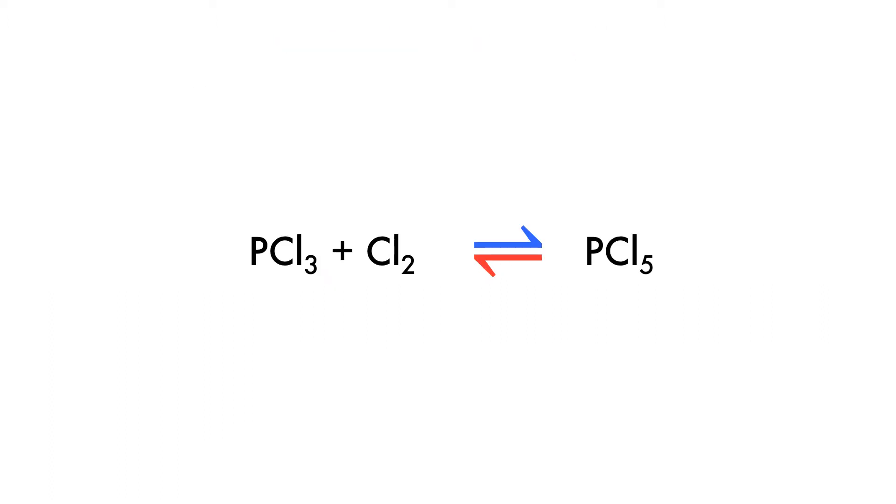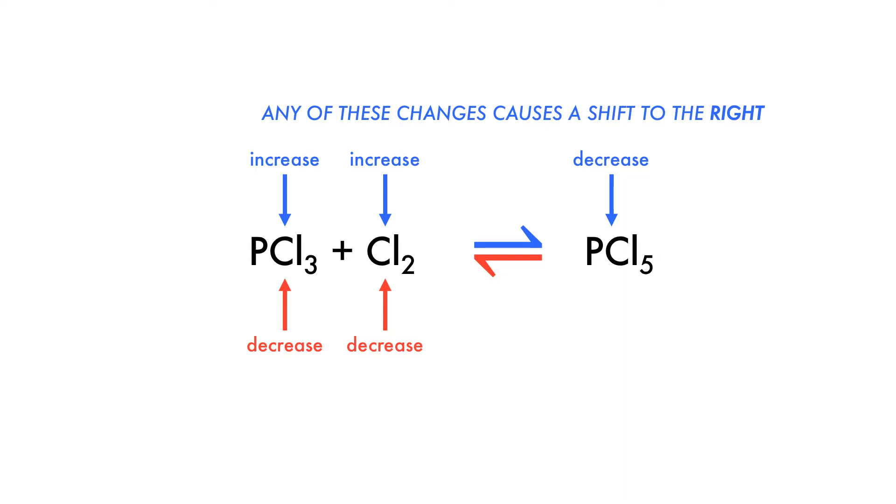The first of these disturbances is an increase in concentration. In the formation of PCl5, an increase in the concentration of either reactant or a decrease in the concentration of the product will shift the equilibrium to the right in order to compensate for the loss of product or excess of reactant. Conversely, a decrease in the concentration of either reactant or an increase in the concentration of the product will cause a shift to the left.